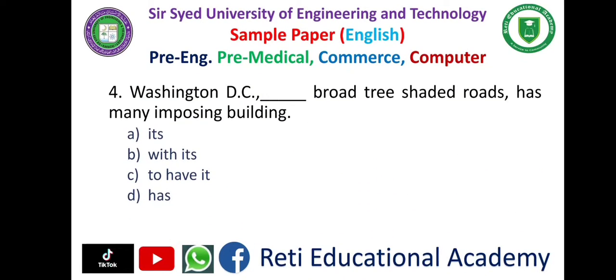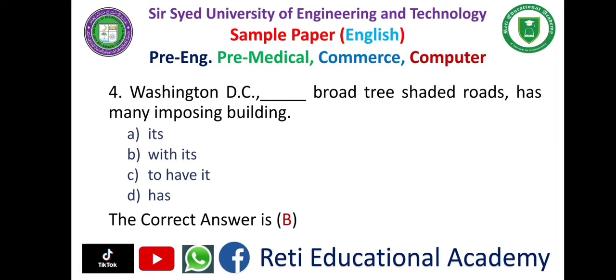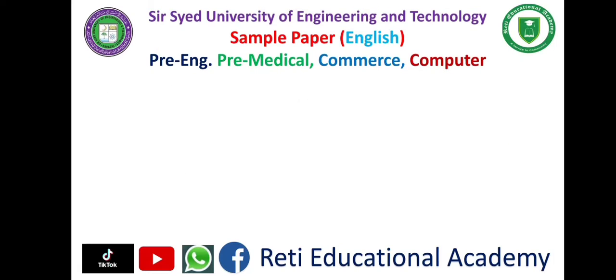Question number four: 'Washington DC dash broad tree-shaded roads has many imposing buildings.' Options: A) it's, B) with its, C) to have it, D) has. The correct answer is B, 'with its.' Washington DC, with its broad tree-shaded roads, has many imposing buildings.